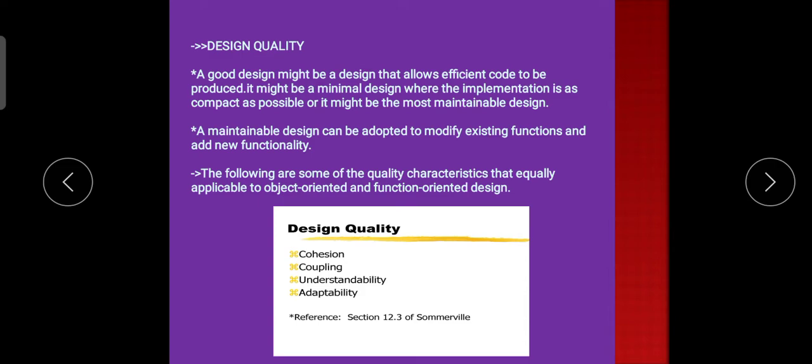A maintainable design can be adapted to modify existing functions and add new functionality. The following are some of the quality characteristics that are equally applicable to object-oriented and function-oriented design: cohesion, coupling, understandability, and adaptability.